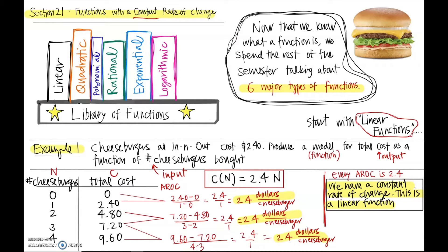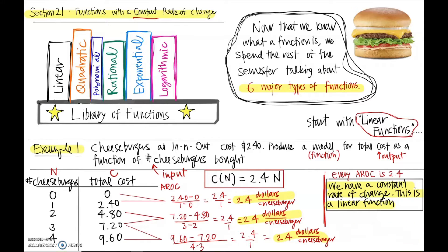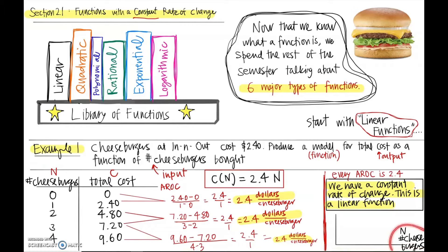Whenever we're in this situation, this is what's called a linear function. I'm going to draw a graph of this function, and we'll see that it is a straight line — that's why it's called a linear function. In the graph of this function, the horizontal axis will always be the input variable, so n is the number of cheeseburgers. On the vertical axis, I'll always have the output variable, which is total cost.